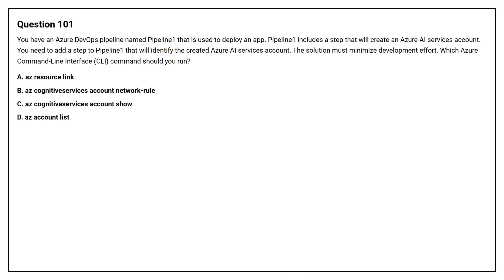Option A: AZ Resource Link. Option B: AZ Cognitive Services Account Network Rule. Option C: AZ Cognitive Services Account Show. Option D: AZ Account List.